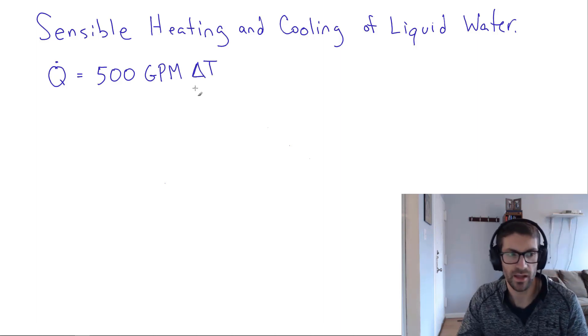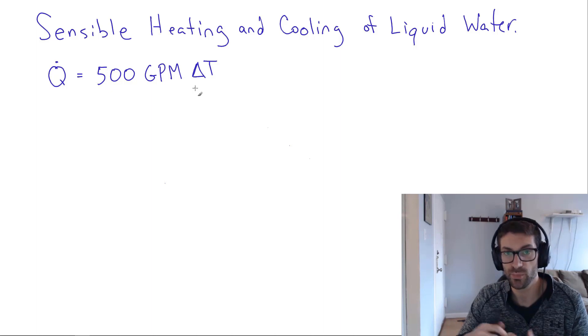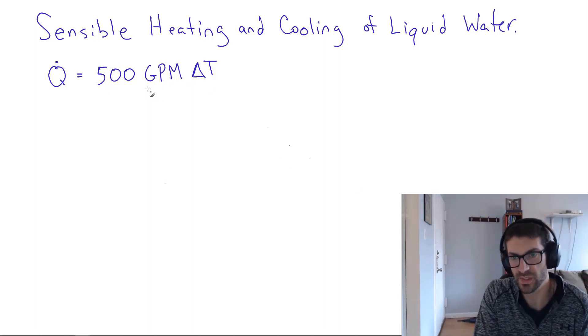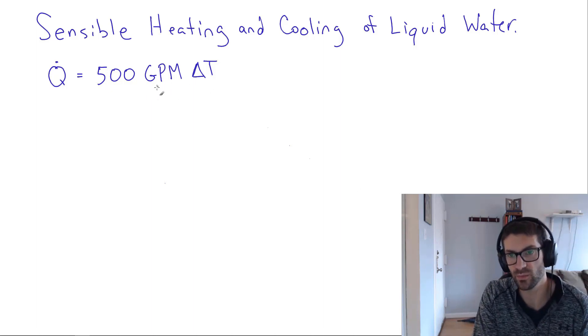Now this comes in handy when analyzing chillers, cooling towers, boilers, or any hydronic systems that you may be interested in. This is predominantly going to be used in the United States because it speaks of gallons per minute. And if you're in parts of Europe or the rest of the world, then you're probably talking about liters per second or some other SI unit. So this may not apply there.